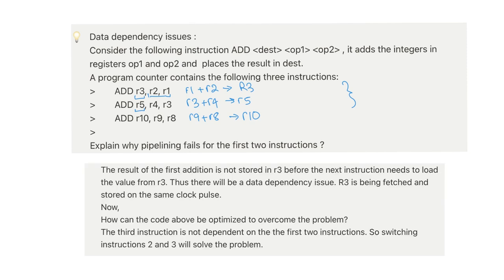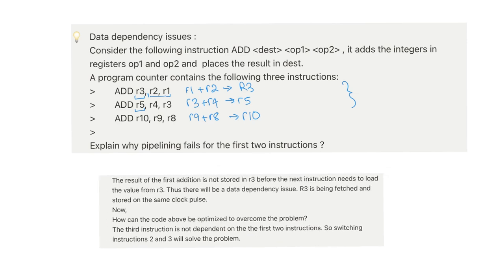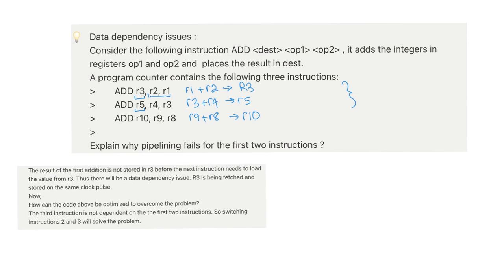Okay, so the reason is that the result of the first addition is not stored in R3 before the next instruction needs to load the value from R3. There will be a data dependency issue that R3 is being fetched and stored on the same clock pulse. Now, let me even explain this in a better way.